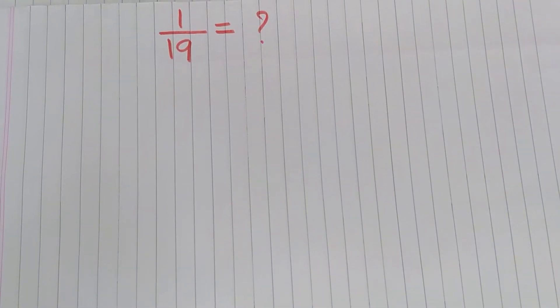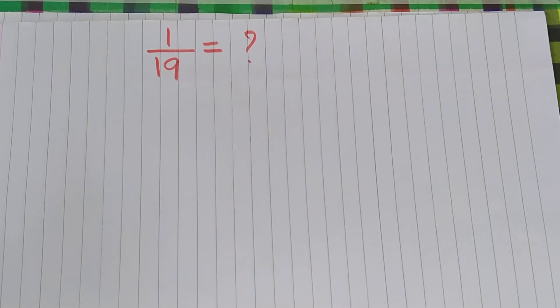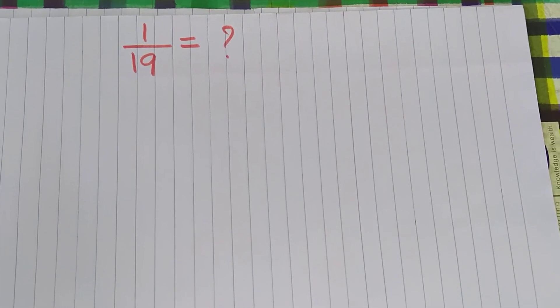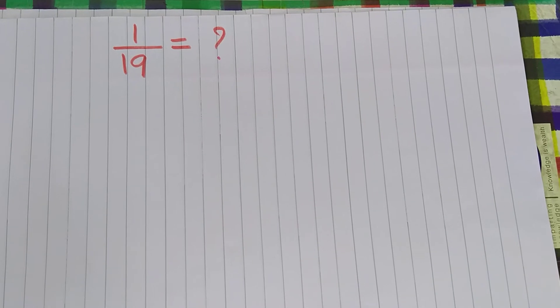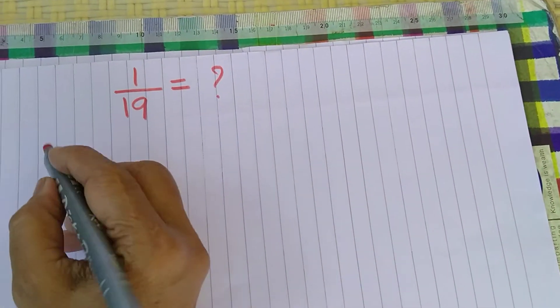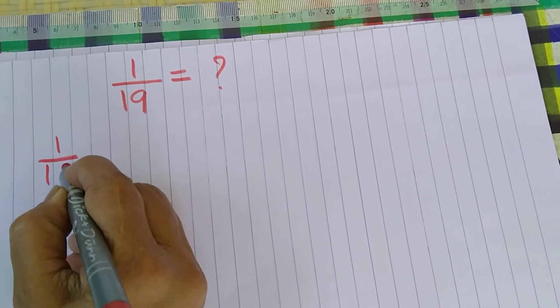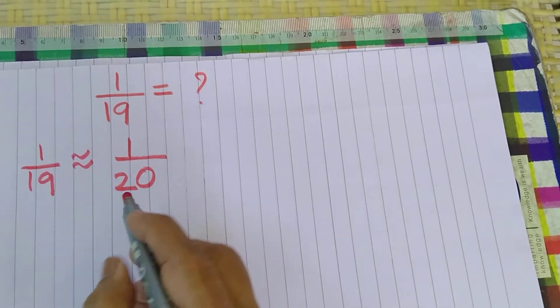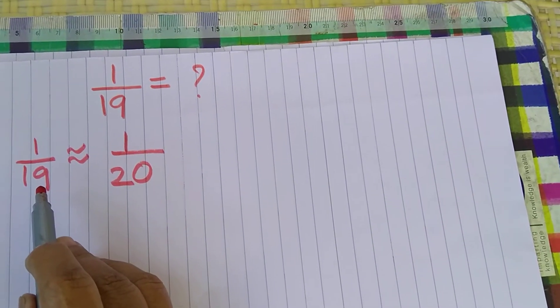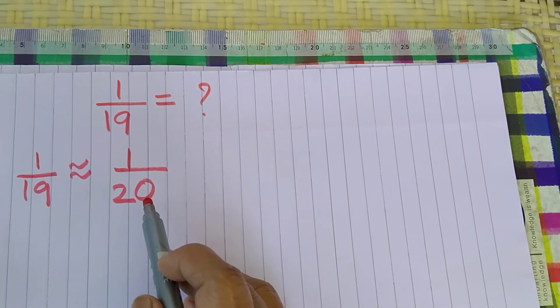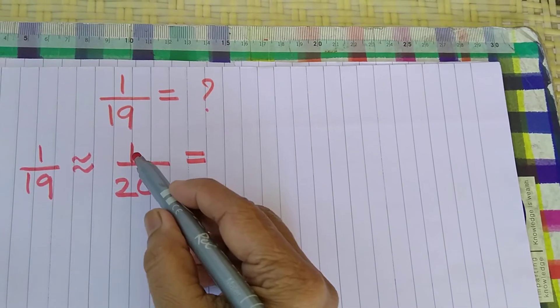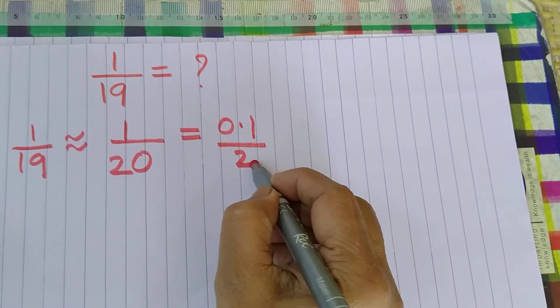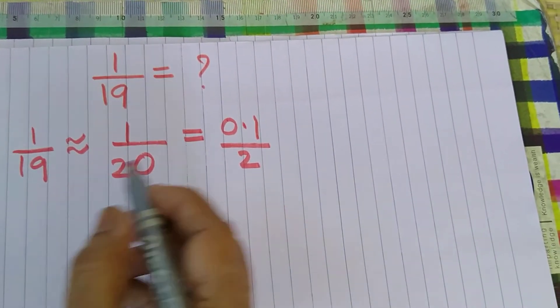Hello viewers, in today's video we will learn how to find 1 upon 19 in decimals in a very simple and easy method that is in one line. Let's see how. Now this 1 upon 19 we write it as 1 upon 20, that is you add 1 here so this becomes 1 upon 20. Now 1 upon 20 can be written as 0.1 upon 2. Let's proceed from here.